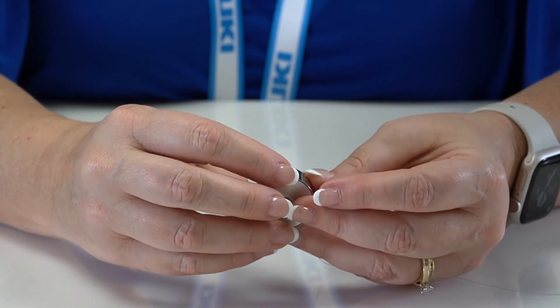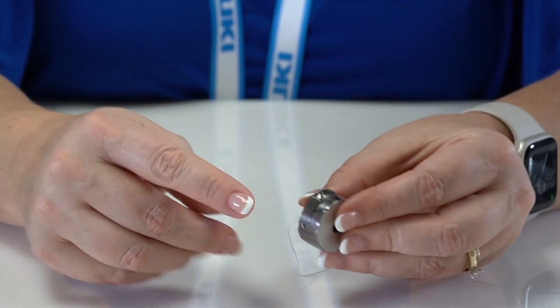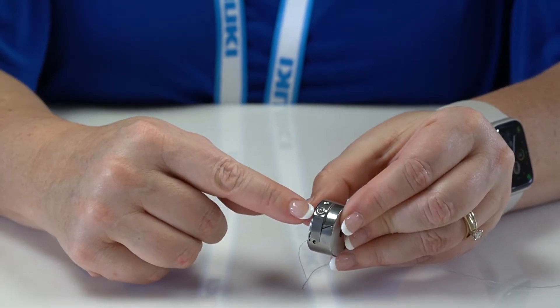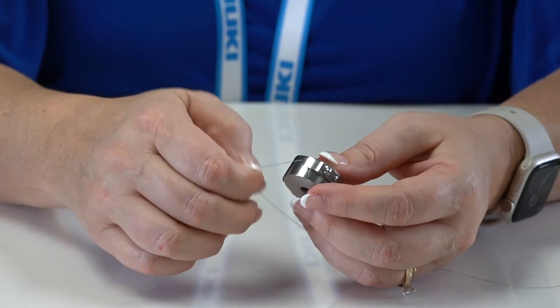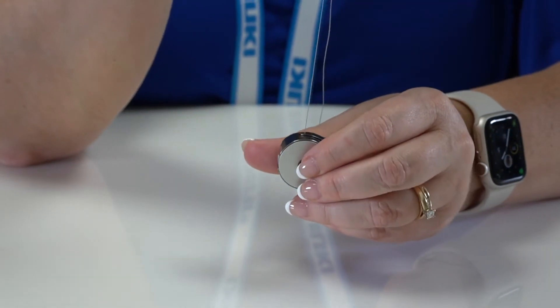The bobbin should run clockwise. You can adjust the tension with this tiny screw on the bobbin case. Pull the thread out a couple of inches and the bobbin should run clockwise.